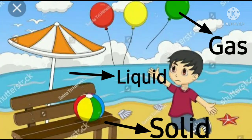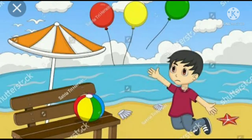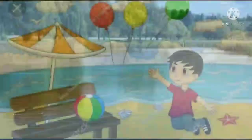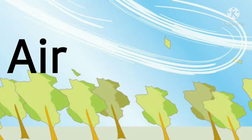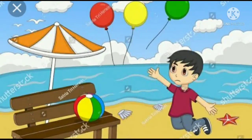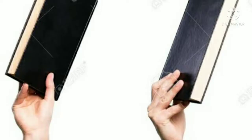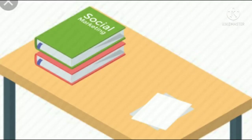We know that there are many things around us, such as plants, animals, water, and air. They all occupy space and have weight. Children, hold the science book in your hand — you can feel the weight of the book. Now put it on the table. The book occupies some space on the table. So, anything that has weight and occupies space is called matter.